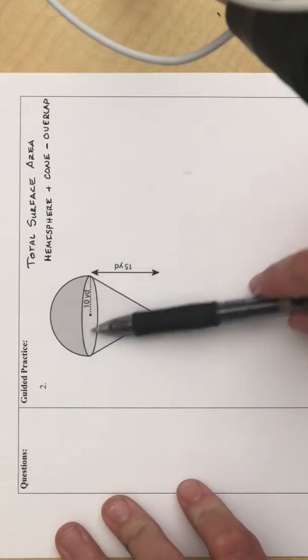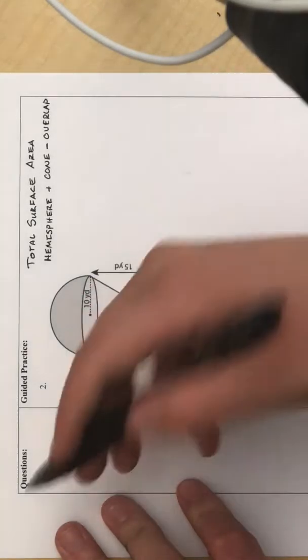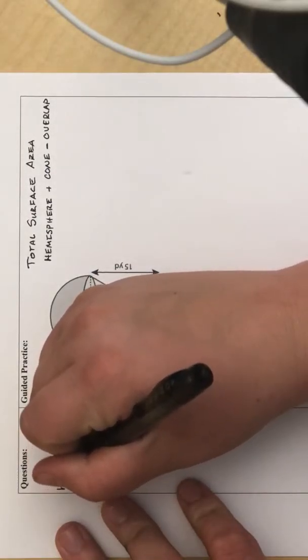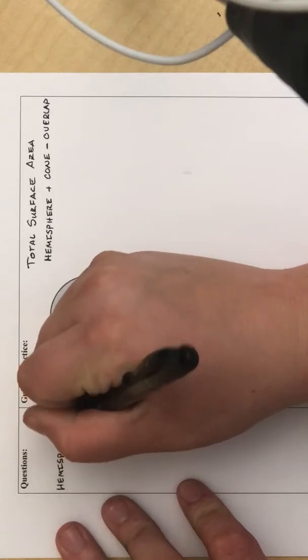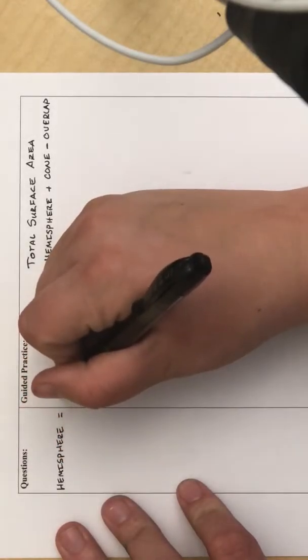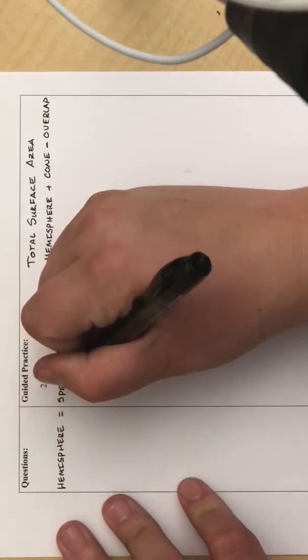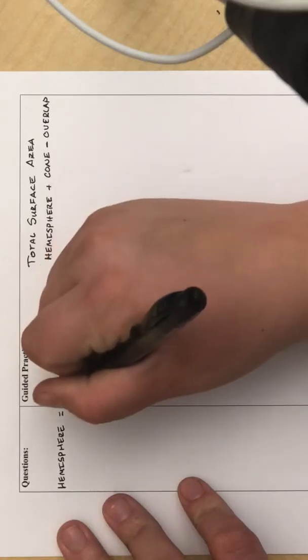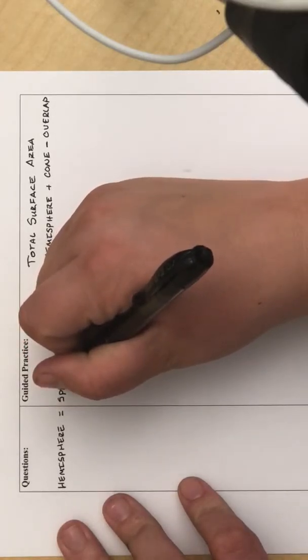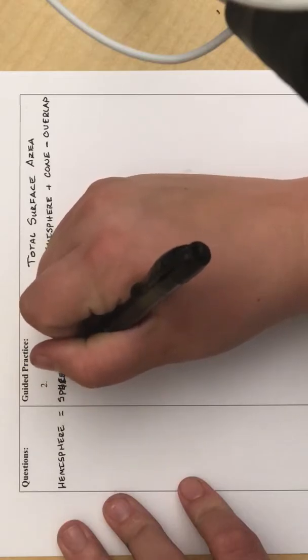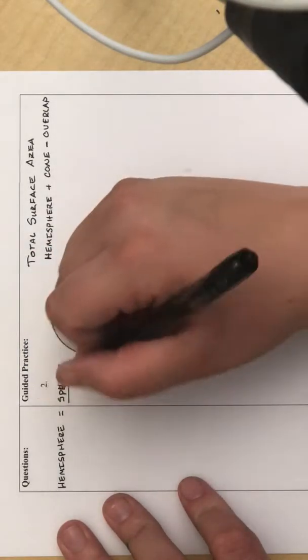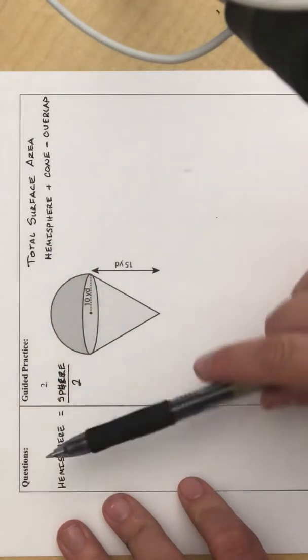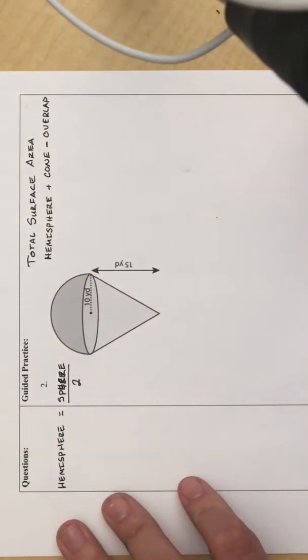So if you remember from the previous example, a hemisphere is half of a sphere. So you can take a sphere, find the surface area of a sphere, divide it by 2, and then you'll have the surface area of that hemisphere.